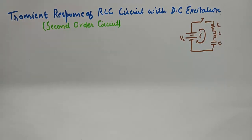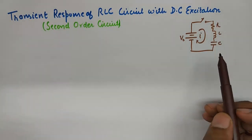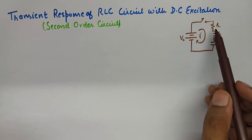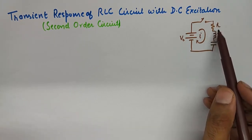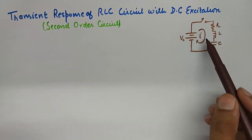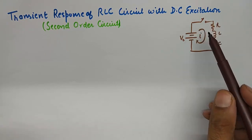Now in RLC circuits with DC excitation we'll get an equation which is second order equation, so it is known as a second order circuit. The circuit looks something like this: we have a DC source, R, L and C are connected in series with this DC source.